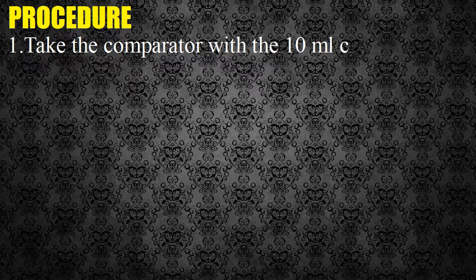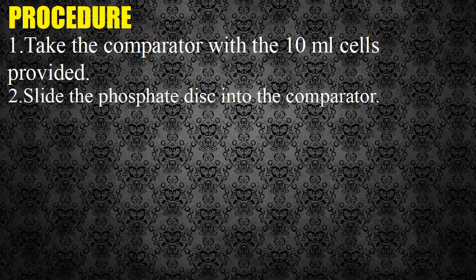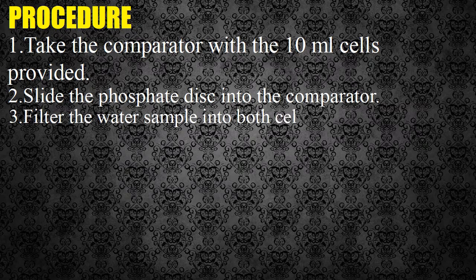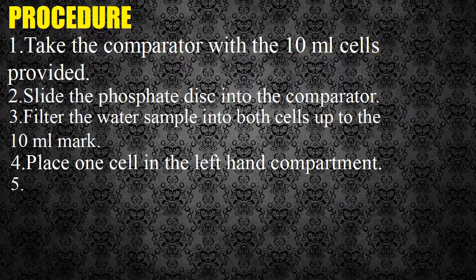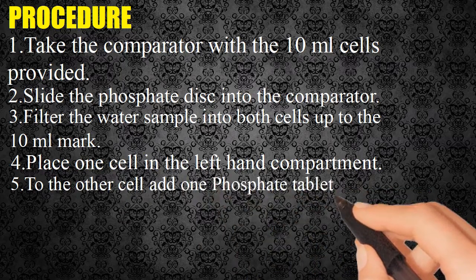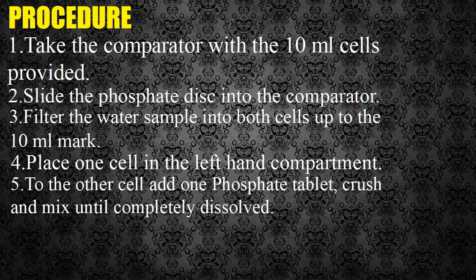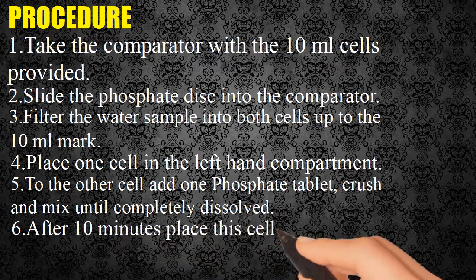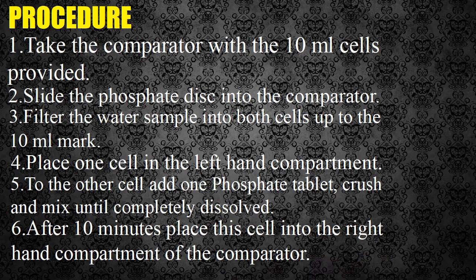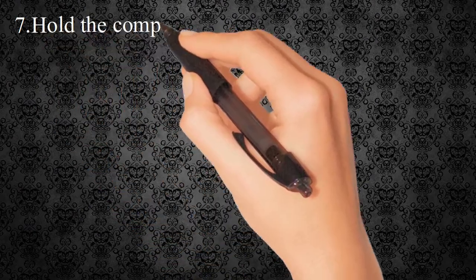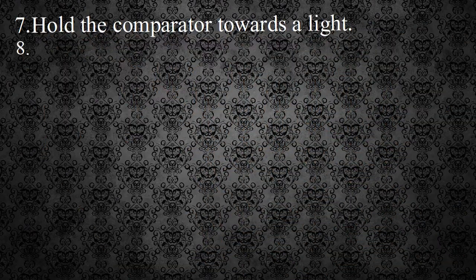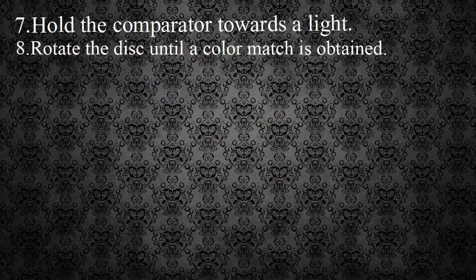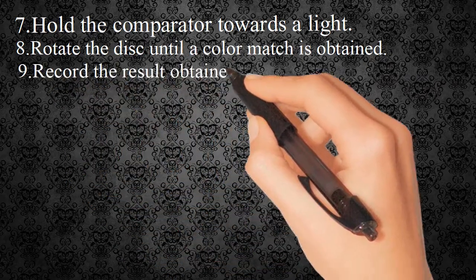Phosphate test procedure: (1) Take the comparator with the 10 ml cells provided. (2) Slide the phosphate disc into the comparator. (3) Filter the water sample into both cells up to the 10 ml mark. (4) Place one cell in the left-hand compartment. (5) To the other cell add one phosphate tablet, crush and mix until completely dissolved. (6) After 10 minutes, place this cell into the right-hand compartment of the comparator. (7) Hold the comparator towards a light. (8) Rotate the disc until a color match is obtained. (9) Record the result on the log sheet against the date of the test.